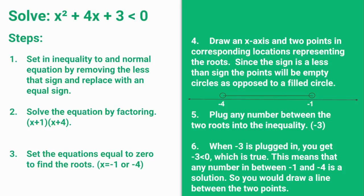Now we are going to plug in any number in between the two roots into the inequality, not the equation. We plug in negative 3, and it gives us negative 3 is less than 0, which is true. So now we know the solution can be anywhere between negative 4 and negative 1.